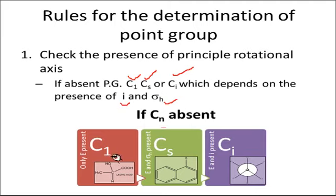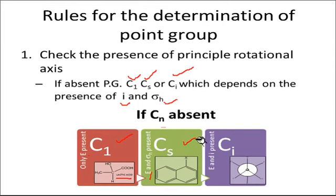If Cn is absent and only E is present, your point group will be C1 — for example, lactic acid, where only rotation at 360 degrees is possible, so only E is present. If Cn is absent and E and σH is present, then your point group will be Cs. And if E and I (center of inversion) is present, then your point group is Ci. So based on the presence of I and σH, you will get the point group if the principal axis of rotation is absent.